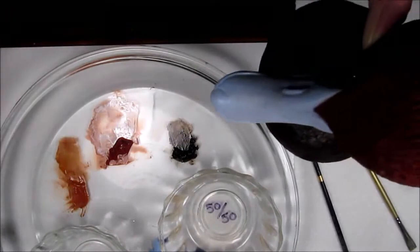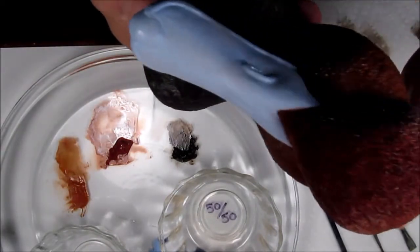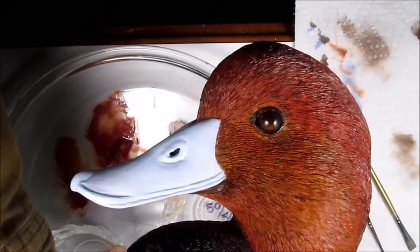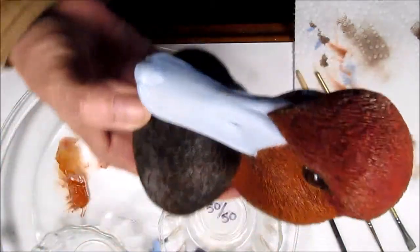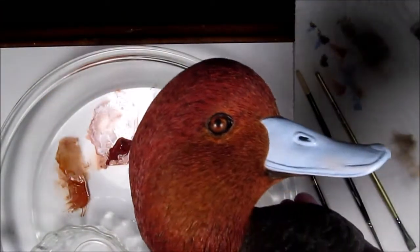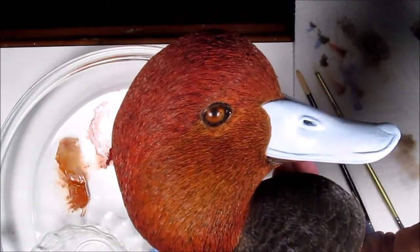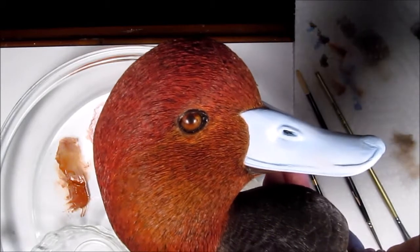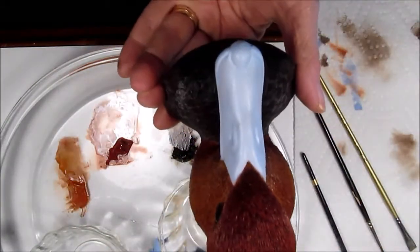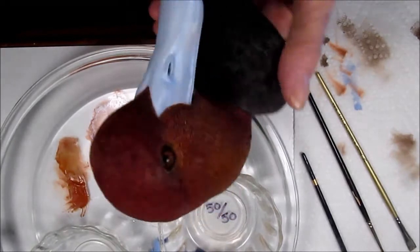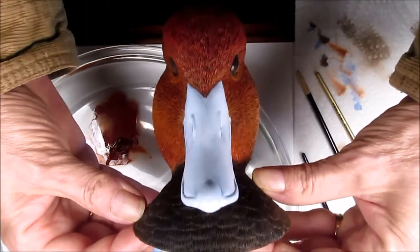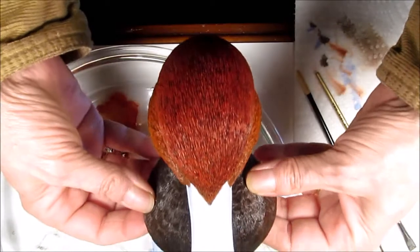All right, so at this point I've got the eyes outlined and the eye rings outlined. I'll be coming back and painting those with some gray a little bit later, after everything's looking even from side to side when it comes to the coloration on the head.